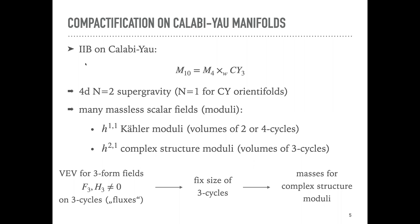The setup, for example, is Type IIB on a Calabi-Yau threefold. I have a warped product of four-dimensional Minkowski space and the Calabi-Yau manifold, or in general a Calabi-Yau orientifold, giving a four-dimensional N=2 or, in the orientifold case, N=1 supergravity action. These Calabi-Yau manifolds have many moduli — many deformation parameters — ending up with a lot of massless scalar fields in the four-dimensional theory of two different kinds: the Kähler moduli, whose number is given by h^{1,1}, corresponding roughly to the volumes of the two- or four-cycles.